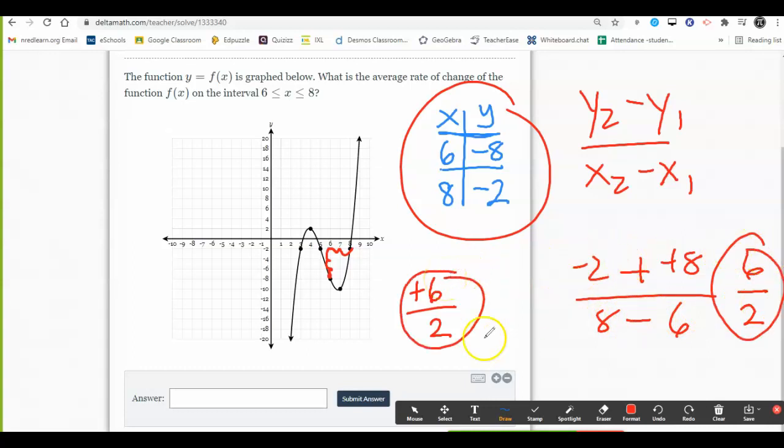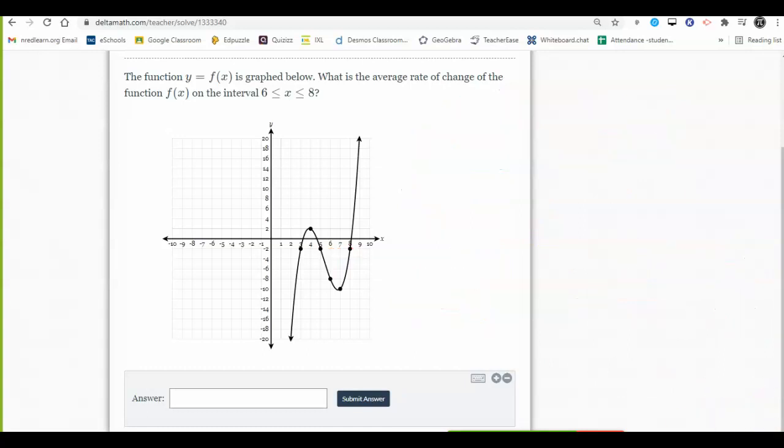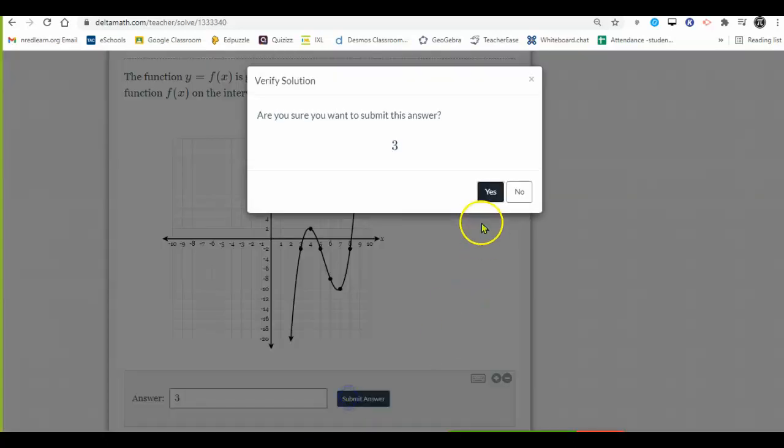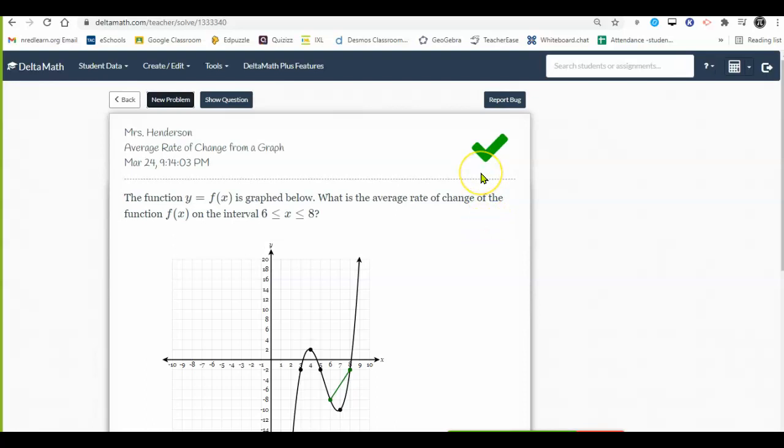6 over 2 can be simplified. You should enter your answer in simplified form. So the average rate of change here was 6 over 2, also known as 3. We got that one right. How about another problem?